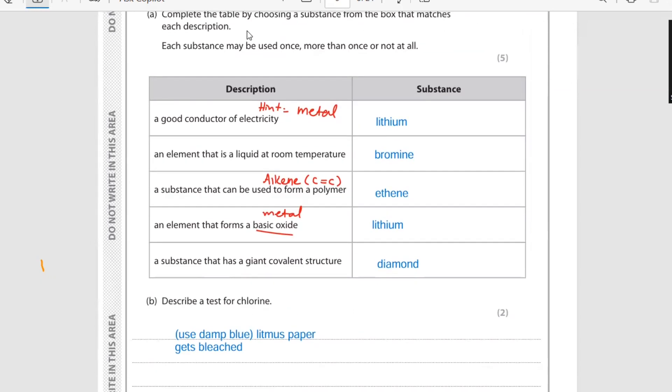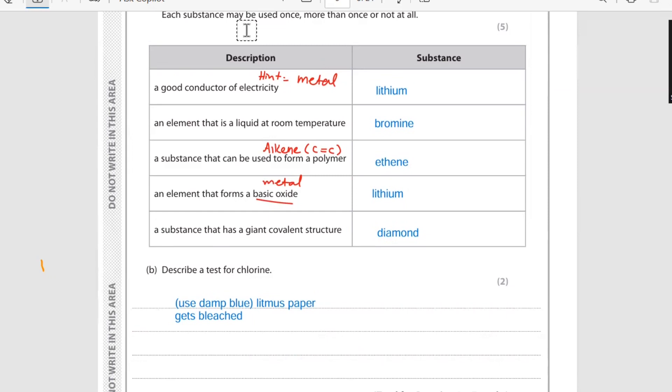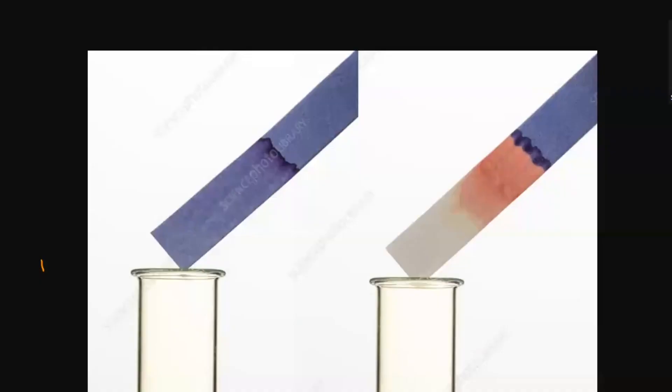Describe a test for chlorine. For chlorine it can bleach out the damp litmus paper. Here you can see in this picture.